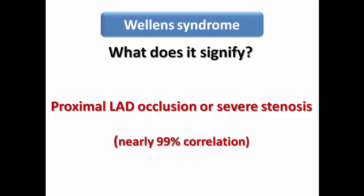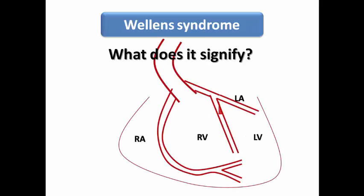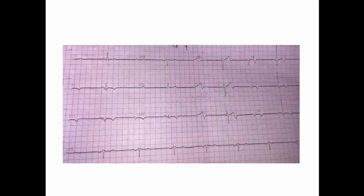This finding correlates with proximal LAD occlusion in up to 100% of patients in some literature. This means the patient has critical coronary anatomy, even if chest pain-free at presentation. That's why it is very important to detect Wellens' syndrome on the ECG. If I have an ECG showing this, I would expect to find subtotal or even total occlusion of the LAD on coronary angiography.